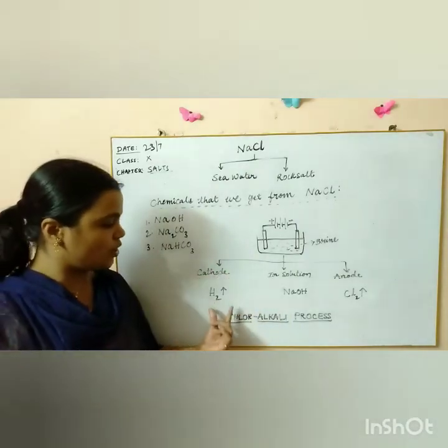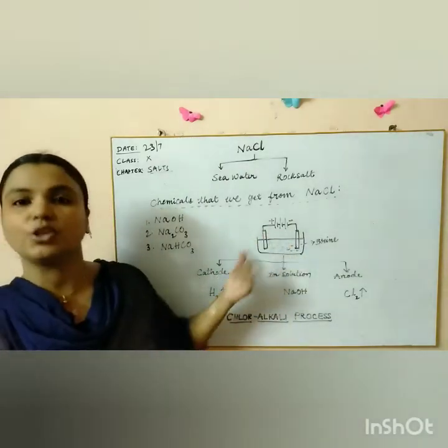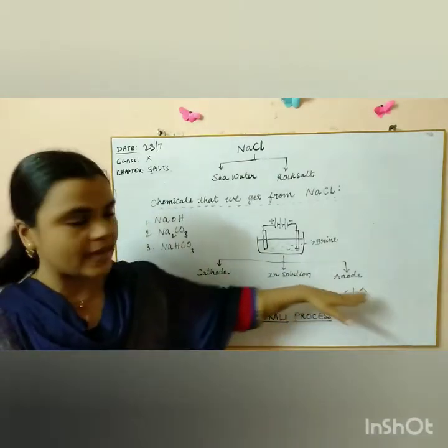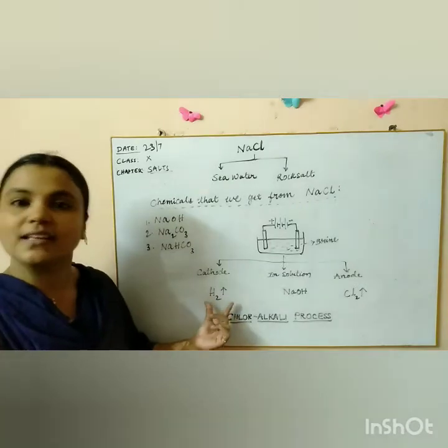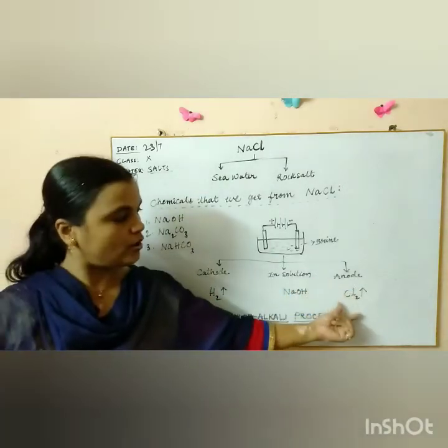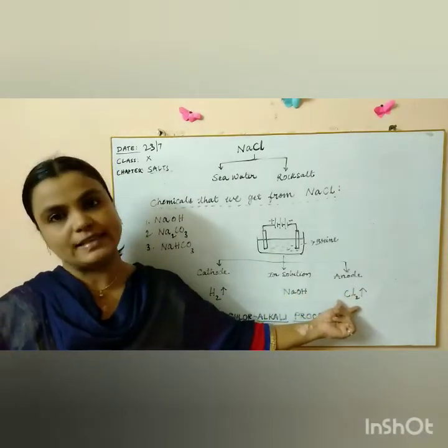So at the cathode, you will see hydrogen gas released out after the electrolysis of brine. What do we get at cathode? We get hydrogen gas released at the cathode. And at anode, we get chlorine gas released.